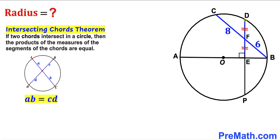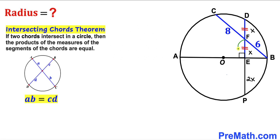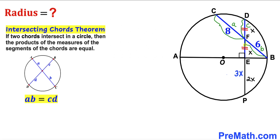We can see that segments DF and EF are equal. Let's call each of these segments X, so the whole segment DE is X plus X, which equals 2X. By symmetry, segment EP is 2X as well, so the whole segment FP is X plus 2X, which equals 3X. Let's label CF as lowercase a, BF as lowercase b, DF as lowercase c, and FP as lowercase d.